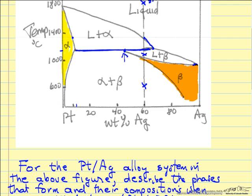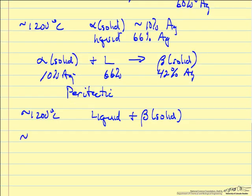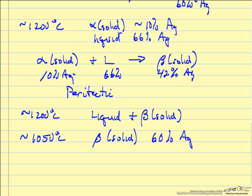If we pick some point here, this is the beta composition and over here is the liquid composition. Eventually we get to the point where we just have beta phase. In a very small temperature range — around 1050°C — we will just have this beta phase. Since it is the only phase, it must be at 60% silver, which is the overall composition.